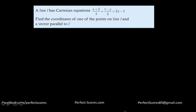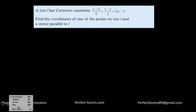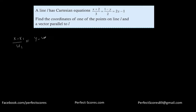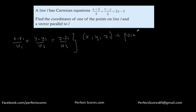Let's look at another question. It says: a Cartesian line L has a given Cartesian equation. Find the coordinates of one of the points on line L. To find the coordinates of a point on line L, recall that (x minus x1)/u1 equals (y minus y1)/u2 equals (z minus z1)/u3 is the Cartesian equation where (x1, y1, z1) is a point on the line. So I need to rearrange the given equation into this standard format.